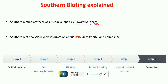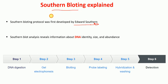Hello everyone. In this lecture today I'm going to talk to you about Southern blotting. Southern blotting is a biochemical method, the protocol for which was first developed by Edward Southern — hence this method is called Southern blotting. This method is used for the detection of DNA, which reveals information about DNA identity and size.